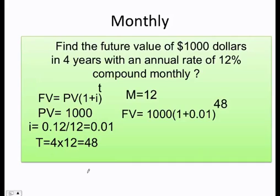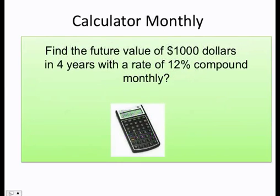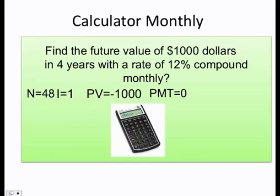Therefore, working this out again, the future value is $1,612.23. You can see here that the highest future value is the one when I compound monthly. In the calculator, I'm going to do the same. n equals 48, i equals 1, because remember that's 12 divided by 12, which is 1.